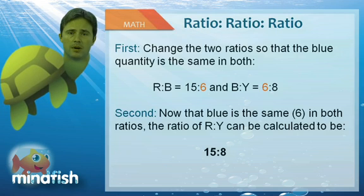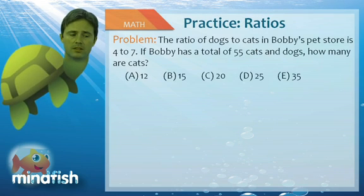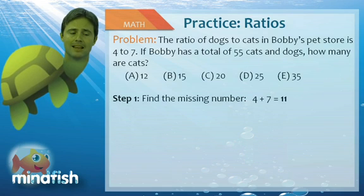So let's look at a practice problem here. The ratio of dogs to cats in Bobby's pet stores is 4 to 7. If Bobby has a total of 55 cats and dogs, how many are cats? So first thing we need to do is find the missing number. So to do that, we simply add the 4 and the 7 to get 11.